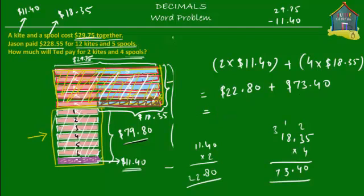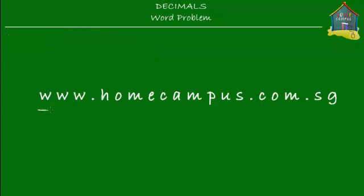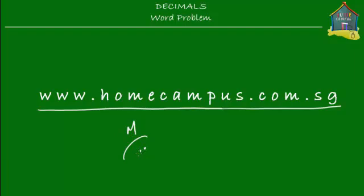So how much will Ted pay for two kites and four spools? $22.80 plus $73.40: 0, 12 carry 1, 6, 9 — Ted pays $96.20. That's your final answer. Ted will pay $96.20 for two kites and four spools. That brings us to the end of this word problem. I hope you've understood how to solve it and will go solve more at www.homecampus.com.sg. Bye-bye.